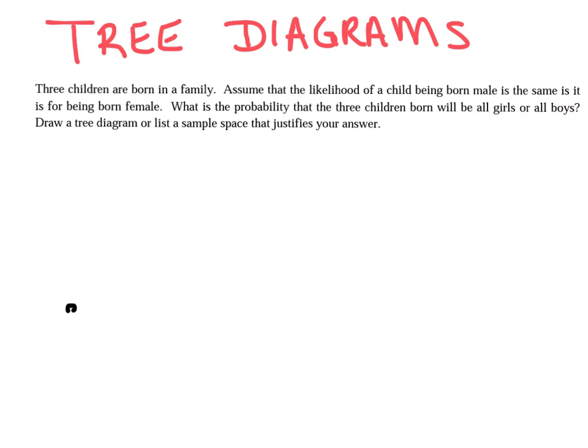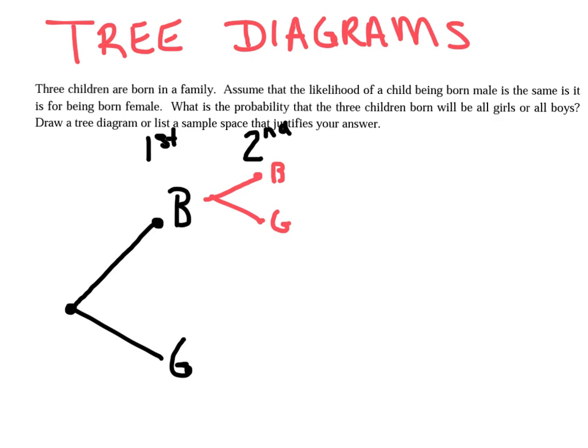So basically that tree diagram starts with one little nook in the corner here, and you just list out your probabilities. So I'm going to call this first child, and basically the first child could either be a boy or a girl. So just B and G. Now you have a second child. So off each of these, you could either be a boy or a girl. And off this one, you could be a boy or a girl. And now we have that third child, so I'm going to put a third here.